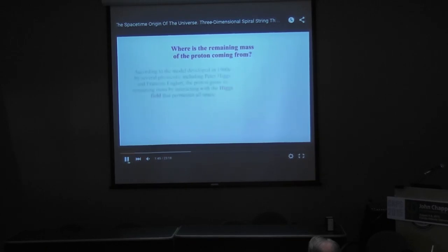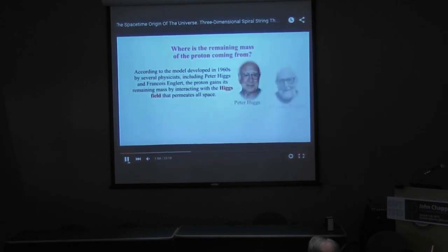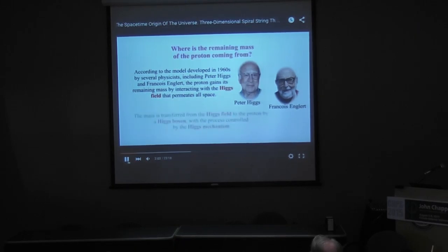According to the model developed in the 1960s by several physicists, including Peter Higgs and Francis Handler, the proton gains its remaining mass by interacting with the Higgs field that permeates all space. The mass is transferred from the Higgs field to the proton by Higgs bosons in a process controlled by the Higgs mechanism.